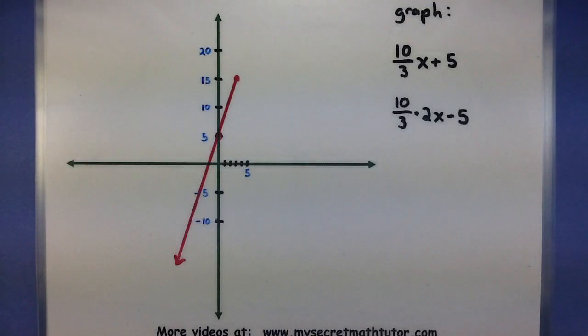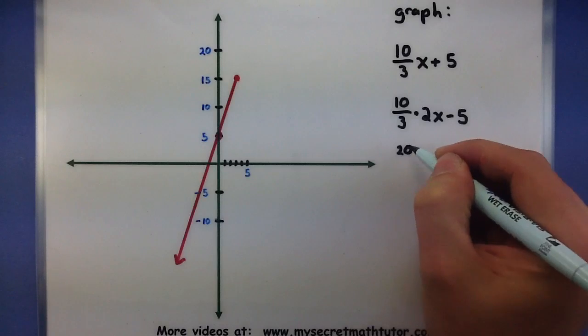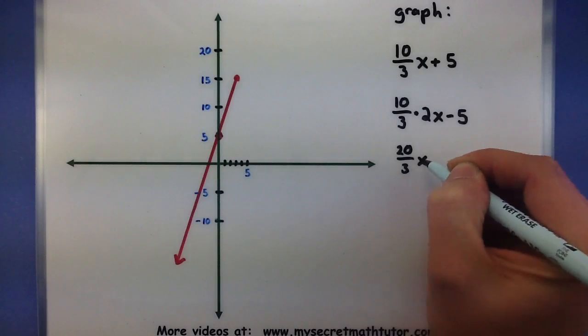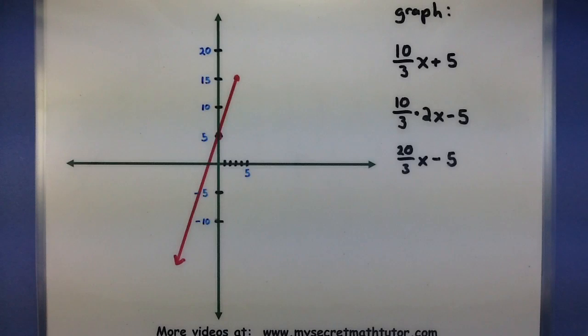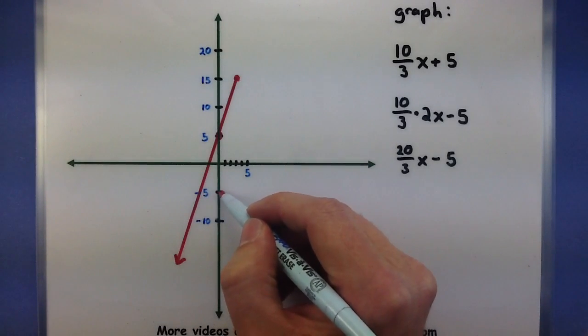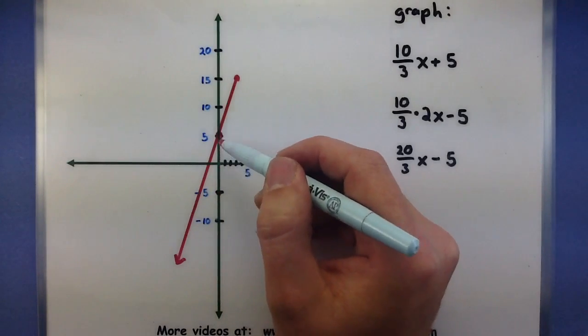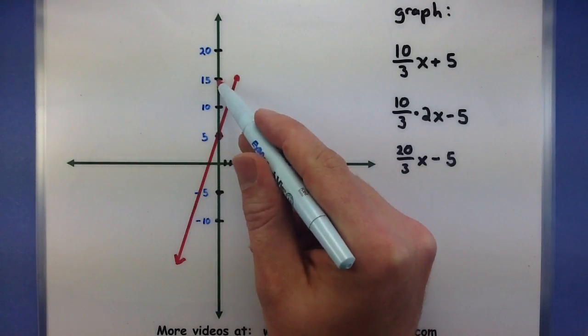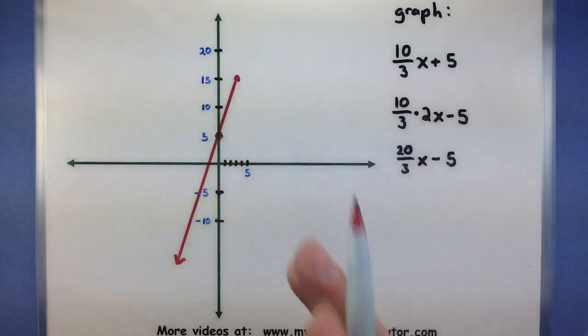Alright, now let's draw the other guy. To see what slope this is, I'm going to multiply the 2 and the 10 together, so essentially graph 20 thirds x minus 5. So as you can see, this one goes through the y-intercept at minus 5. So I'd normally go down here, and then I'd go up 20. So 5, 10, 15, 20, then to the right 3. There we go, so we end up in the same spot.